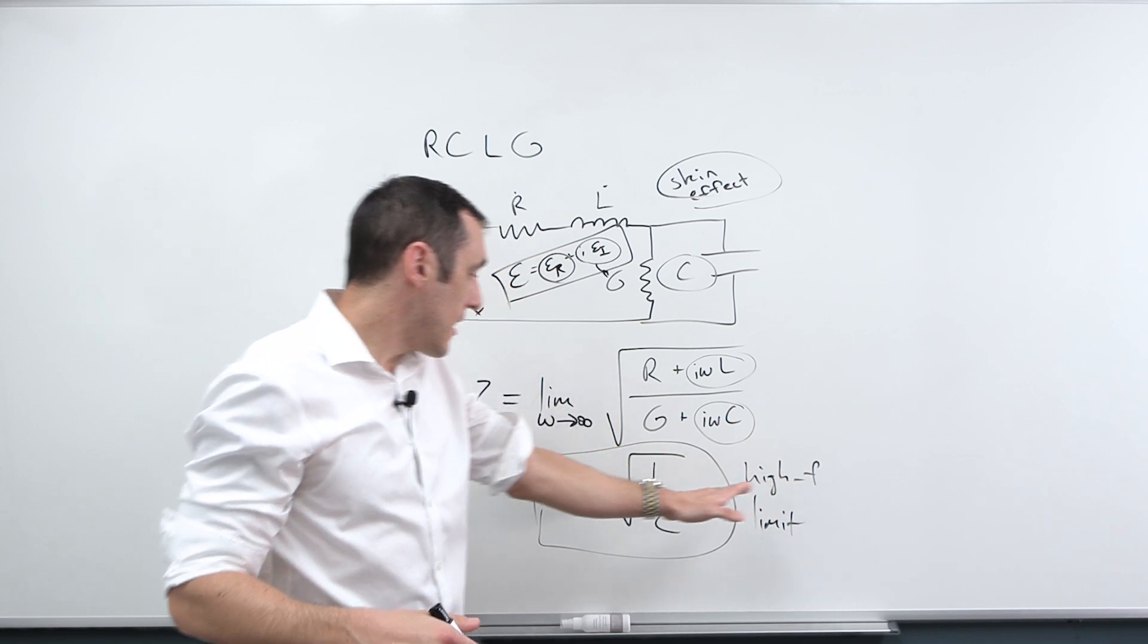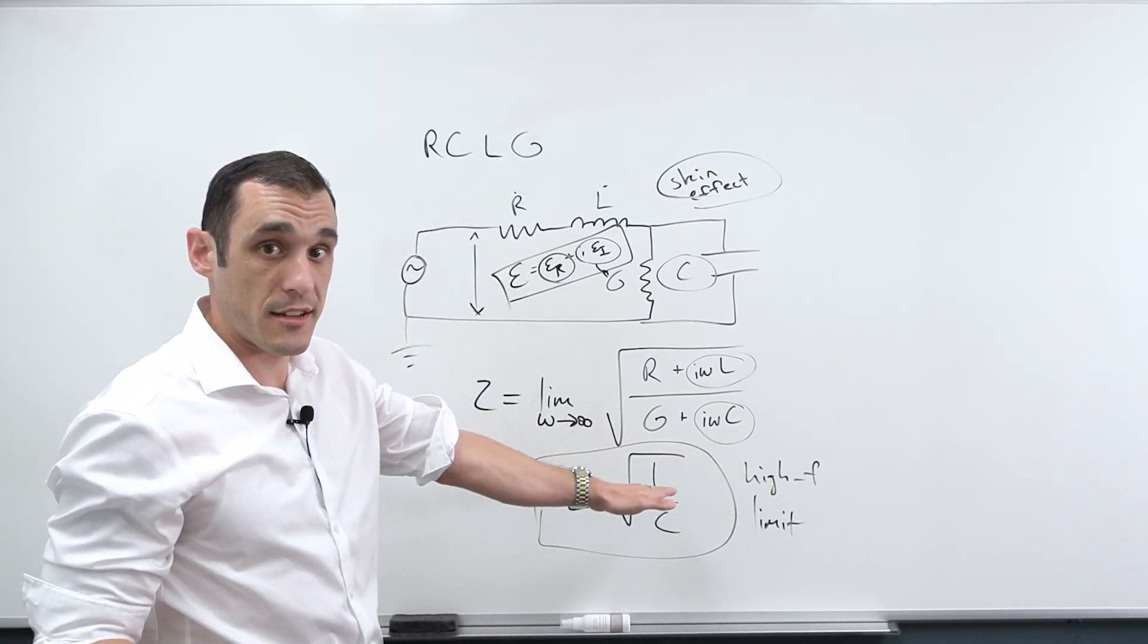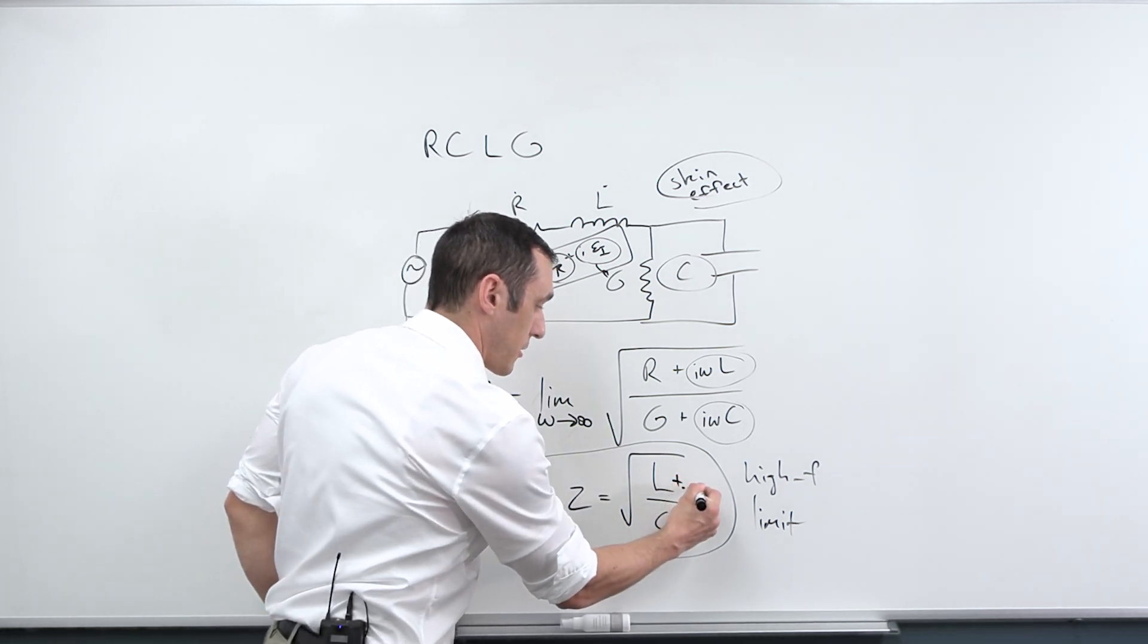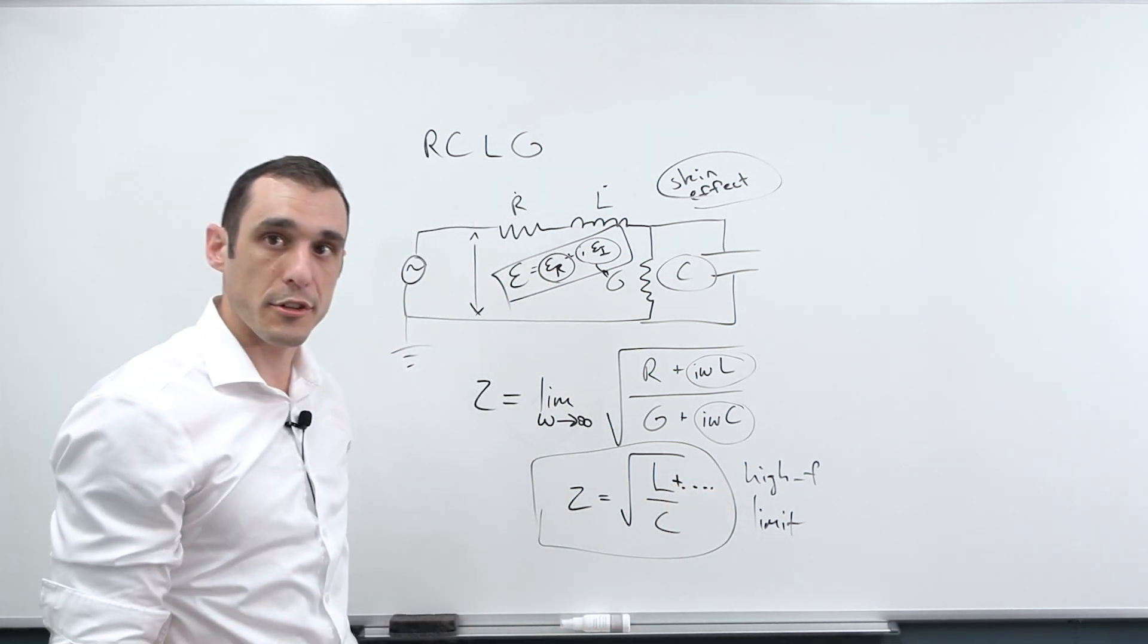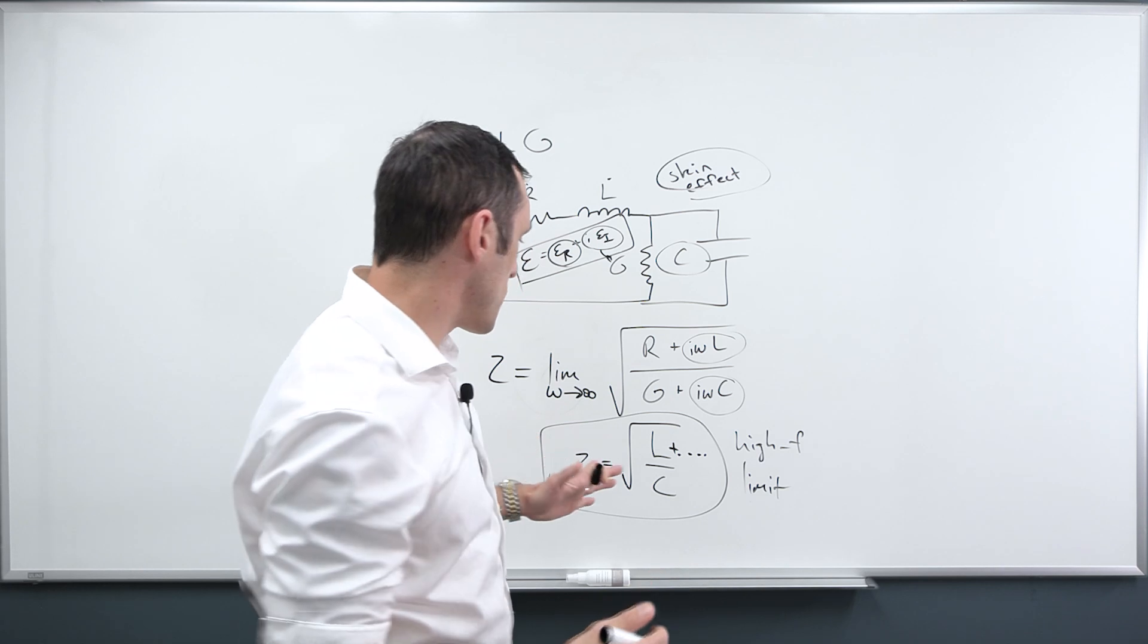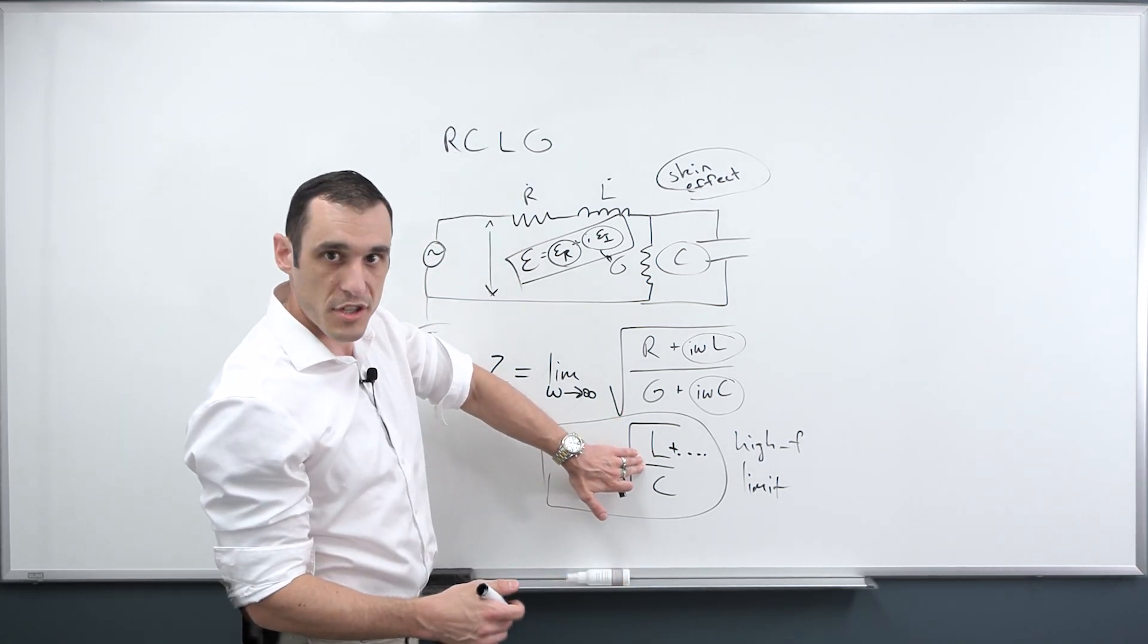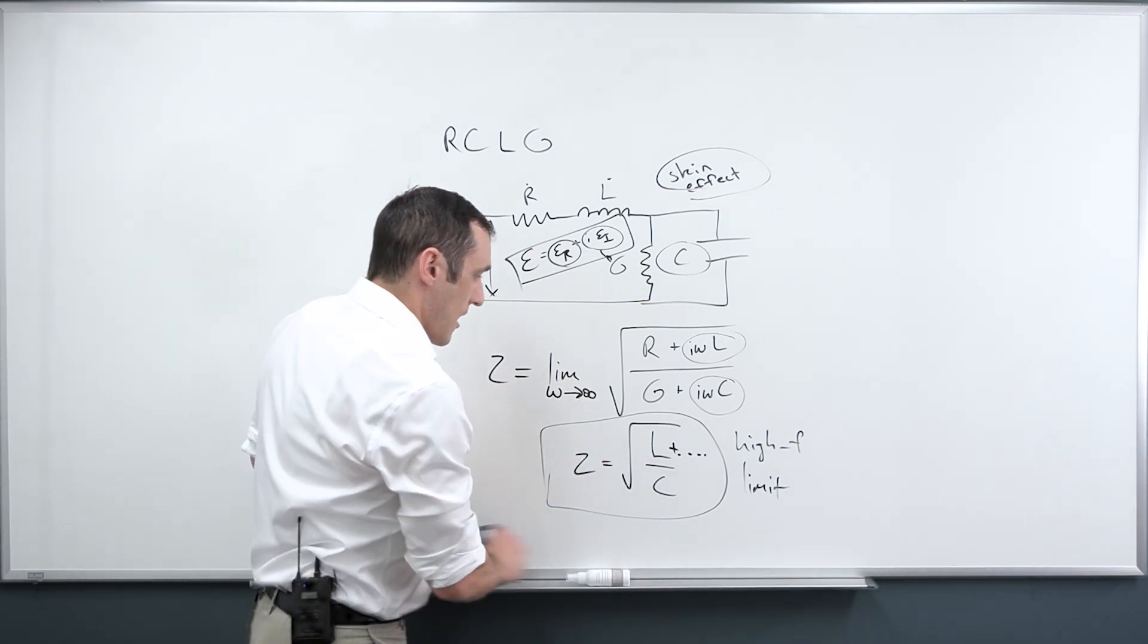Then there's a whole other set of losses due to copper roughness. The copper that's deposited on a printed circuit board substrate and then that gets etched to form the transmission line is actually not perfectly smooth. It actually has some roughness. And that roughness will increase the skin effect. So the skin effect already contributes some impedance, but then the copper roughness contributes even more impedance.